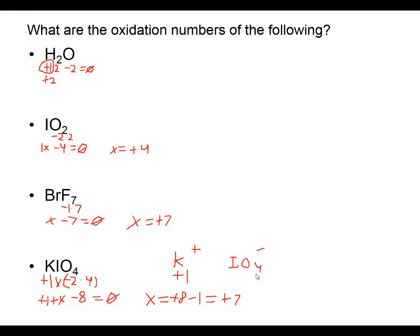I could have determined the oxidation numbers separately for the periodate ion - a negative two for oxygen with a negative eight total for four oxygens, plus the unknown for iodine, should add up to the charge of negative one. Adding eight to both sides gives the same result: a positive seven for iodine.